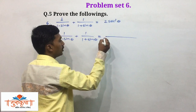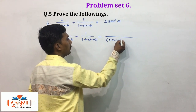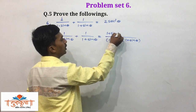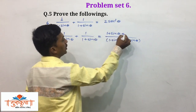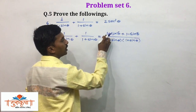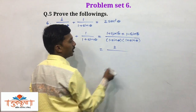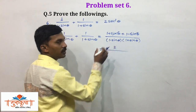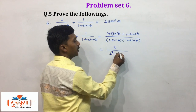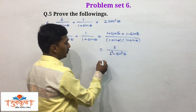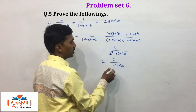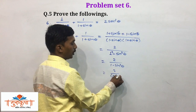First we simplify by taking the product of denominators and cross-multiplying the numerators. The product of denominators is (1 minus sin theta)(1 plus sin theta). Cross-multiplying: 1 times (1 plus sin theta) is (1 plus sin theta), plus 1 times (1 minus sin theta). Here plus sin theta and minus sin theta cancel, leaving 1 plus 1 equals 2 in the numerator. For the denominator, using the identity (A plus B)(A minus B) equals A squared minus B squared, we get 1 squared minus sin squared theta, which is 1 minus sin squared theta.